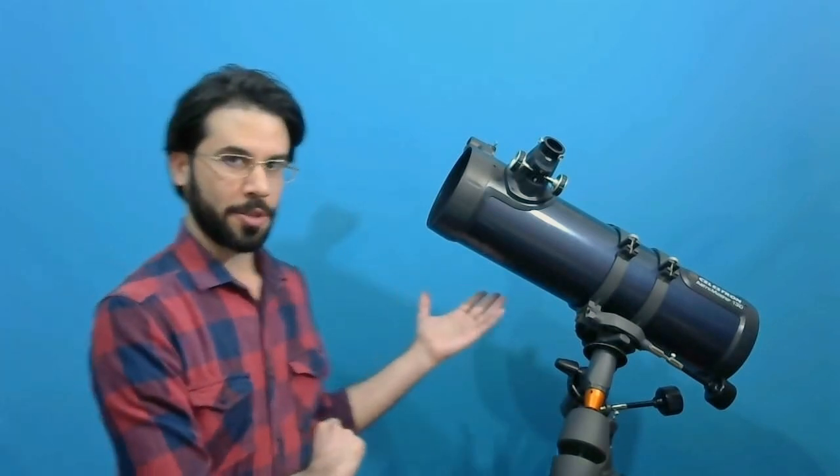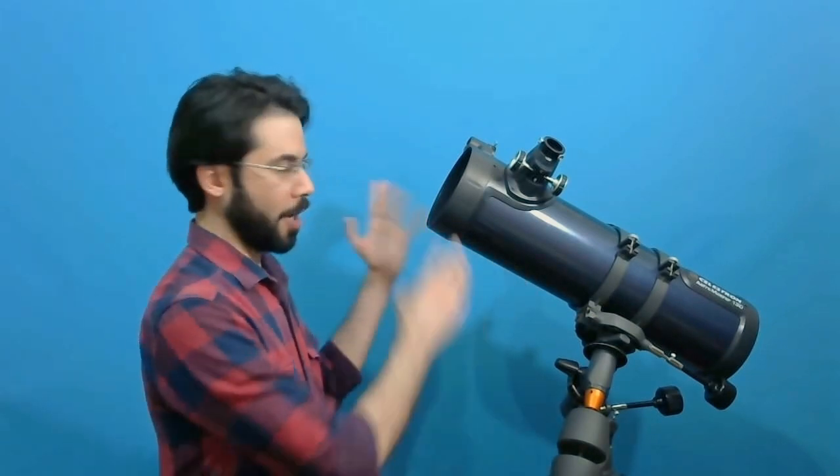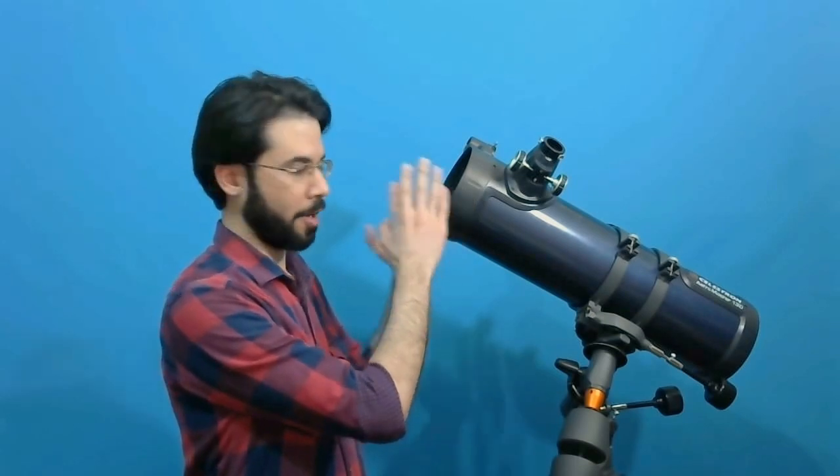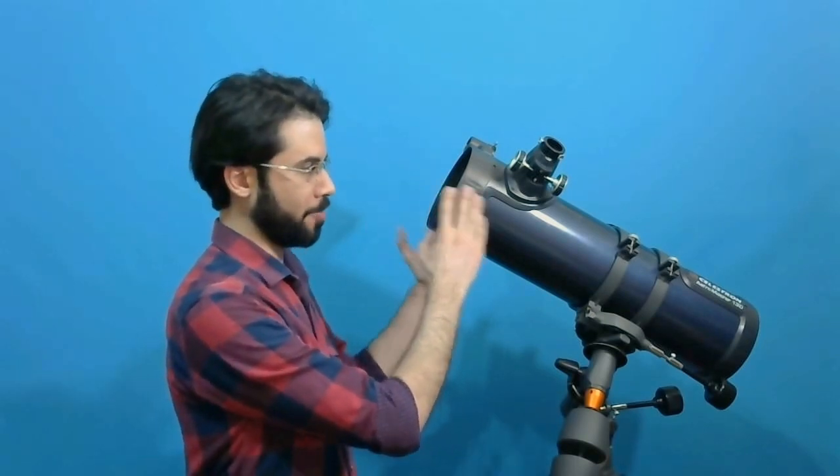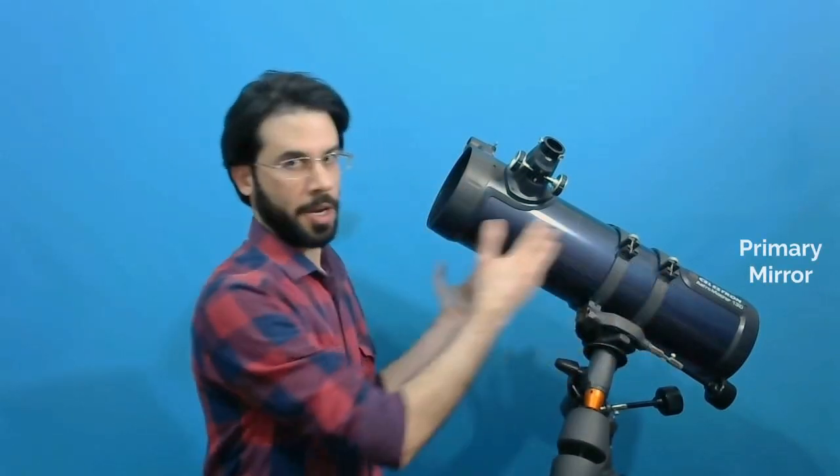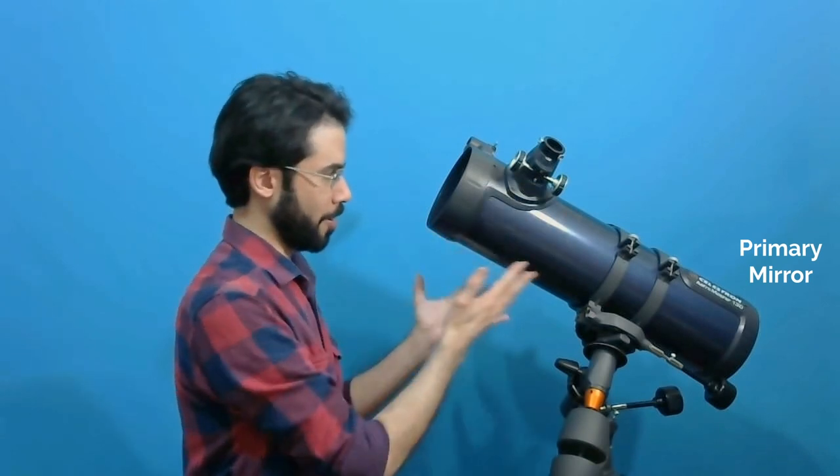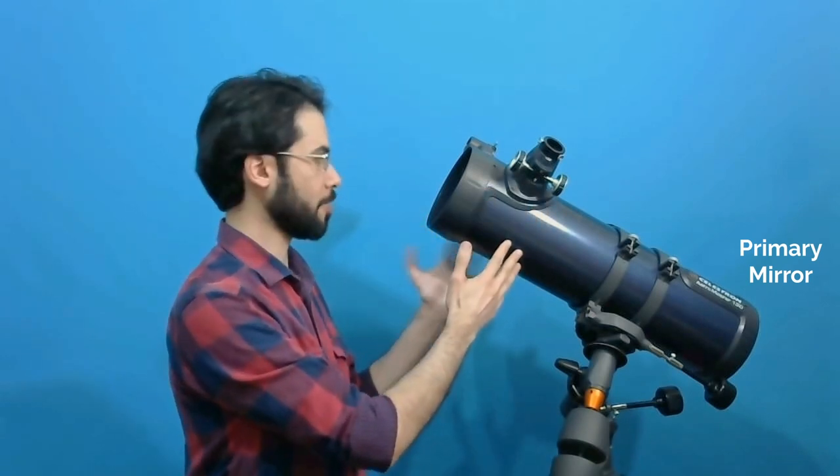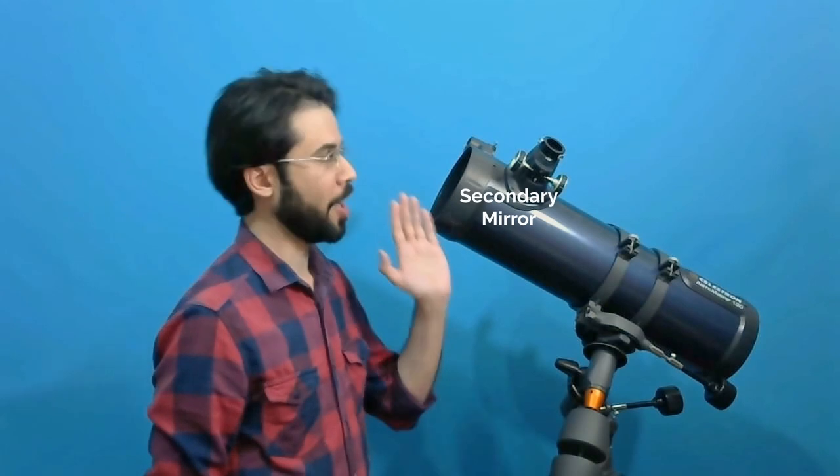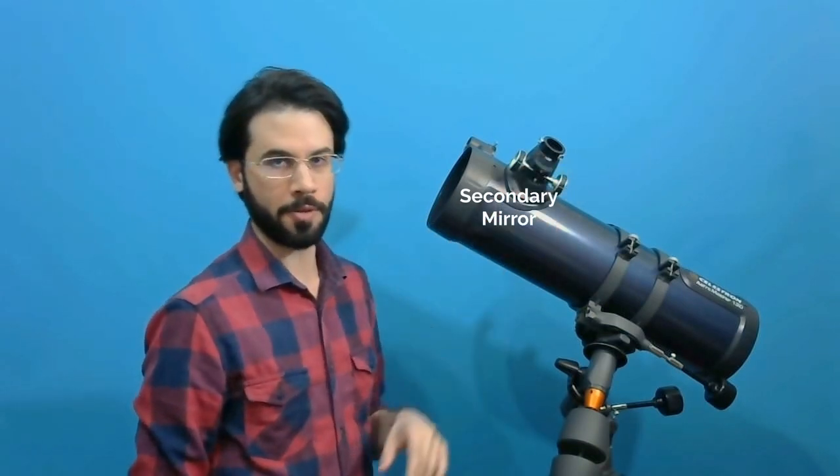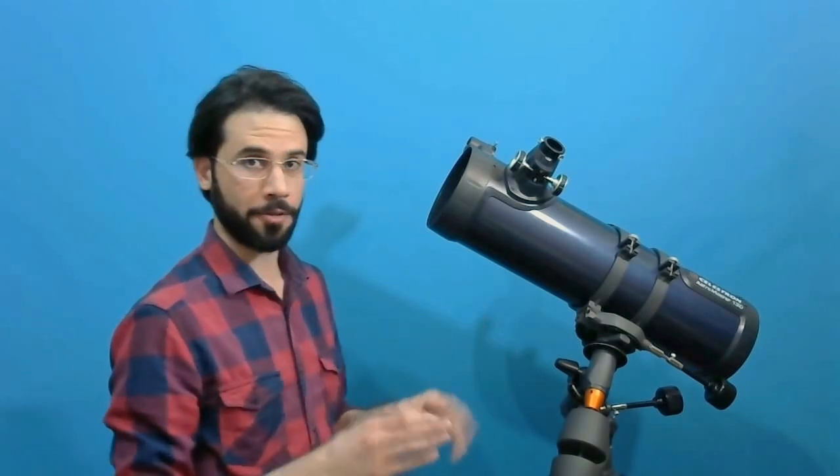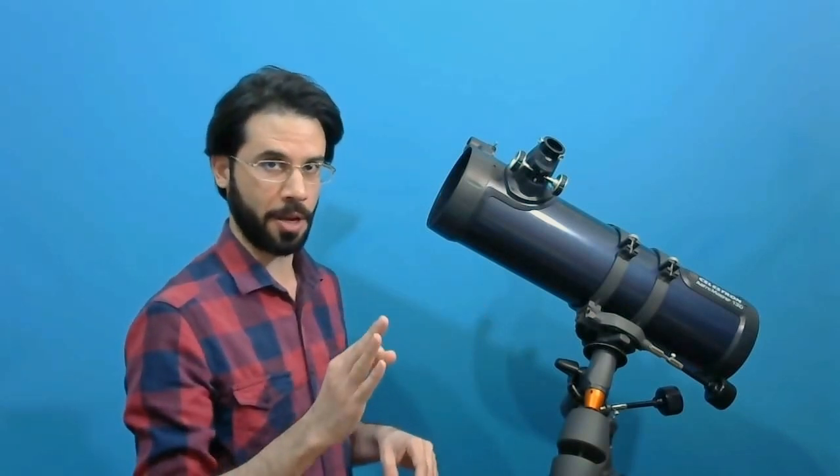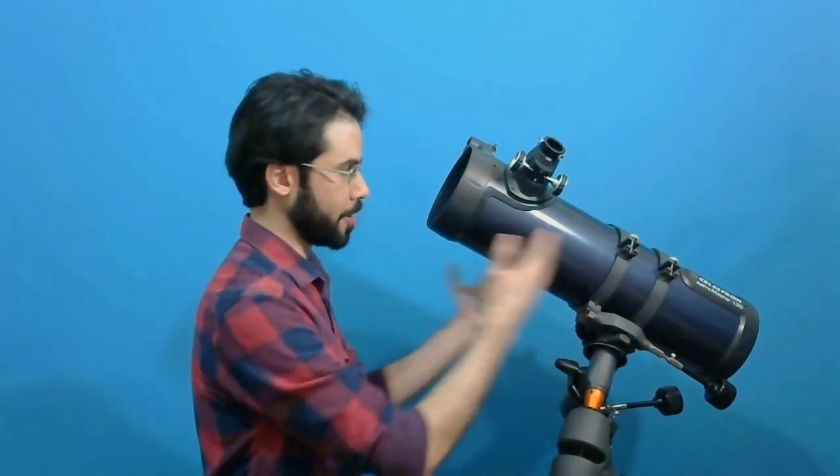As you know, in Newtonian telescopes, the light is gathered from here, is collected really from here, and then reflected by the primary mirror at the area like this, and then reflected by the secondary mirror into the focuser, and finally into the eyepiece, and you can see the object. So we have three things in here that should be aligned: primary mirror, secondary mirror, and of course, the focuser itself.